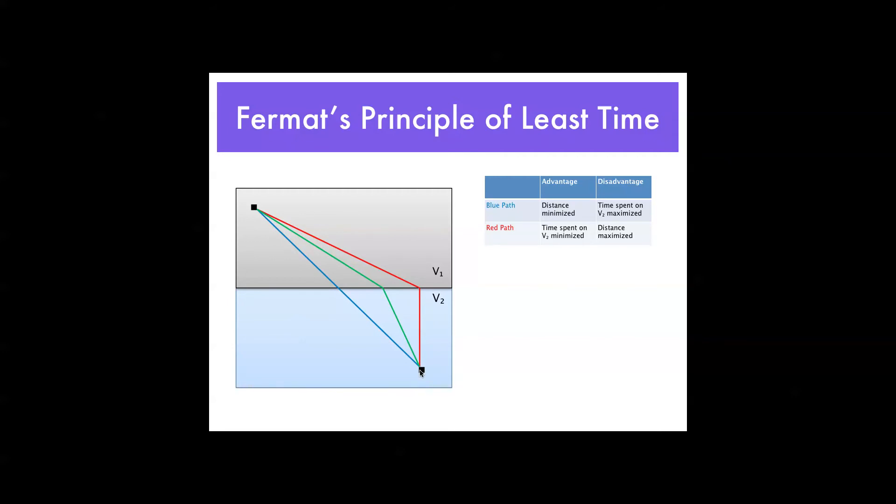So, the way to solve this problem, to find the exact path of least time, not just an approximation like we do have here in this drawing, would be first to set up a function. As you can see, this function outputs T being time. So, this is the time it takes to traverse the path. Now, this function has a variable of x.